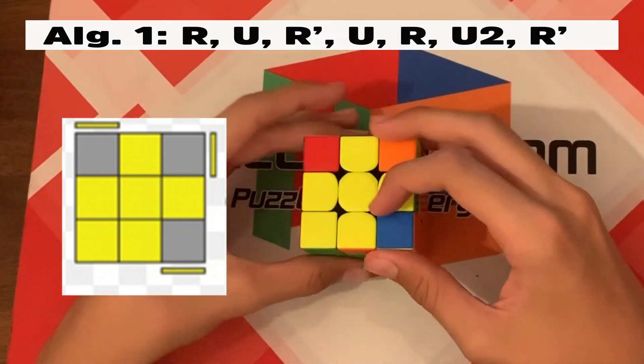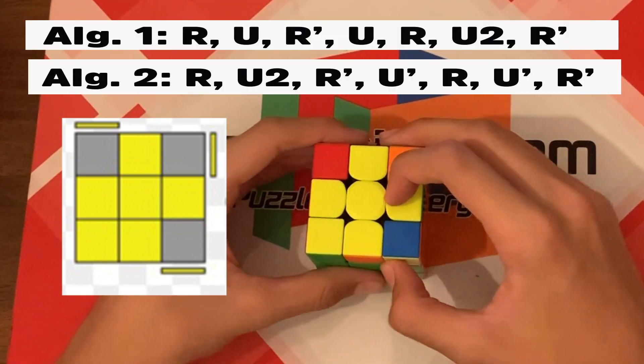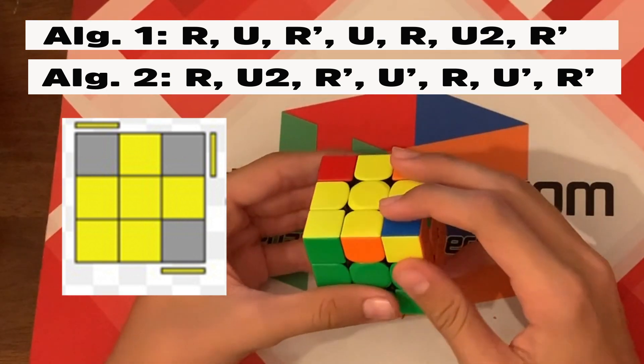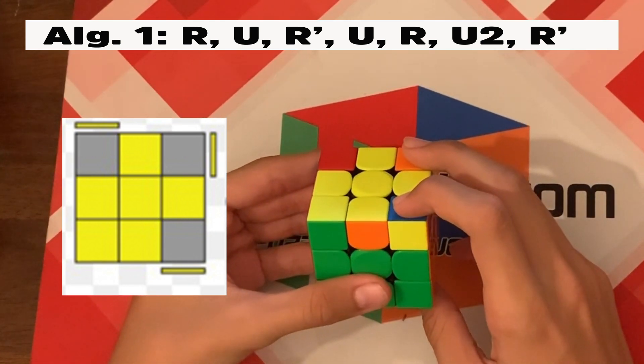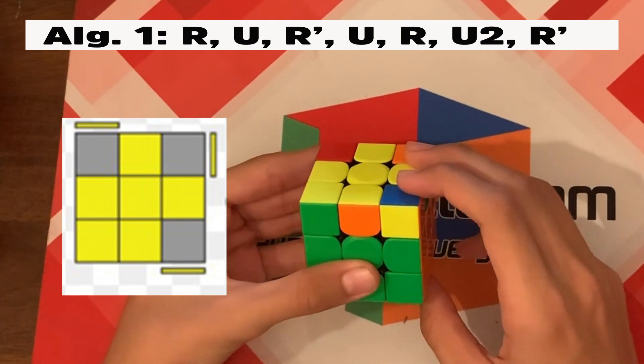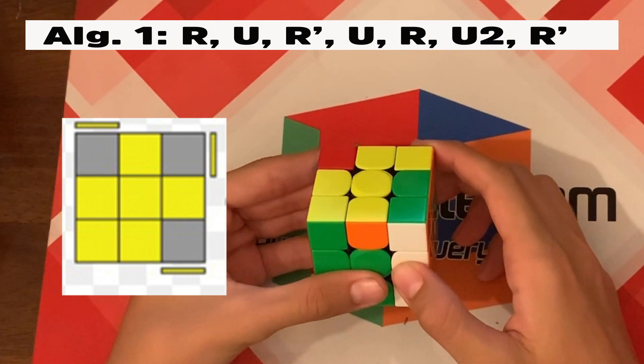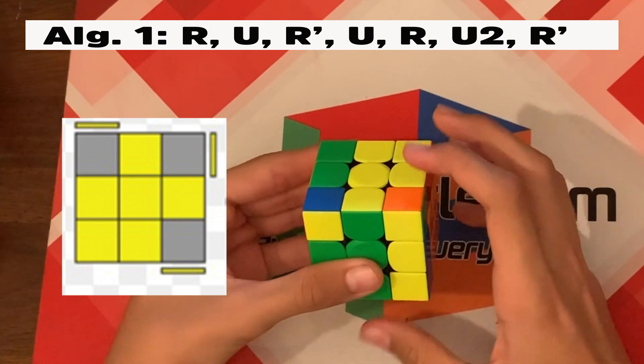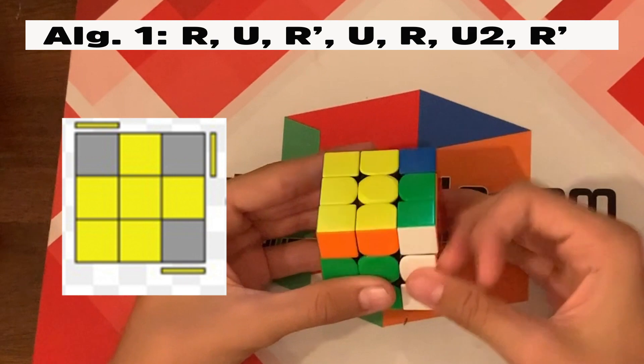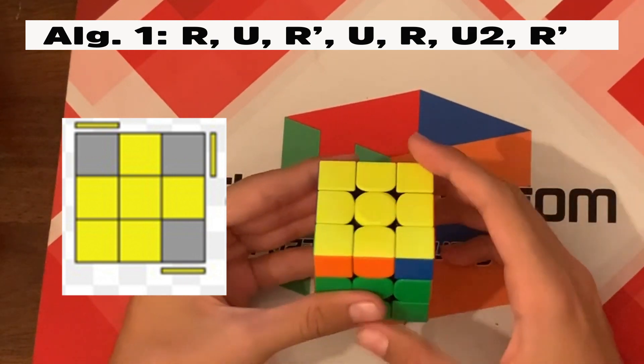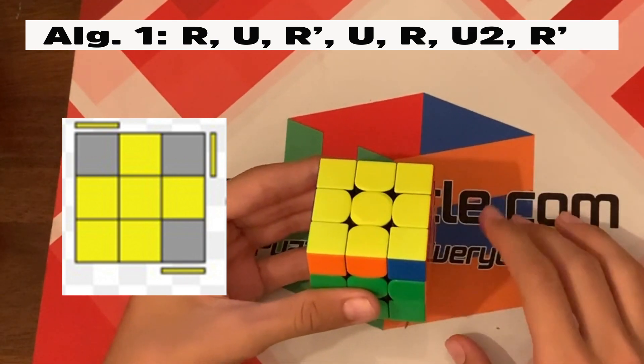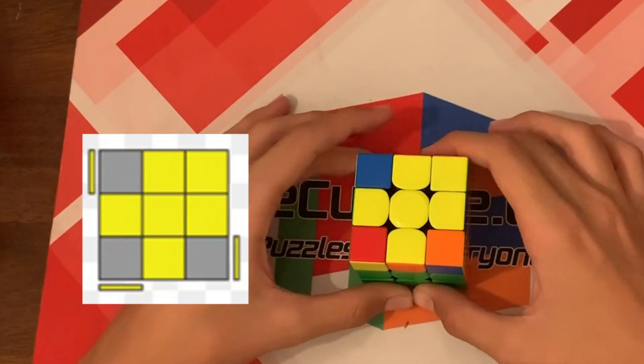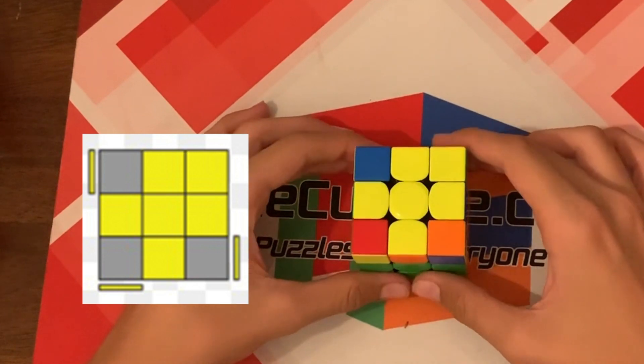So here's algorithm one and algorithm two. You'll be able to see that. So if your cube looks like this, do algorithm one. And algorithm one is R U R prime U R U 2 R prime. And then you'll have the yellow.